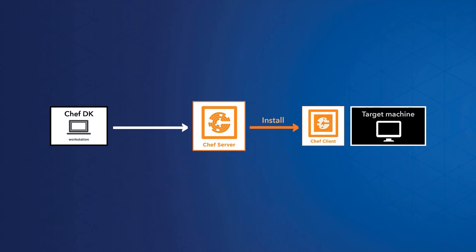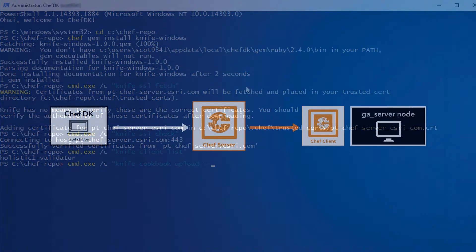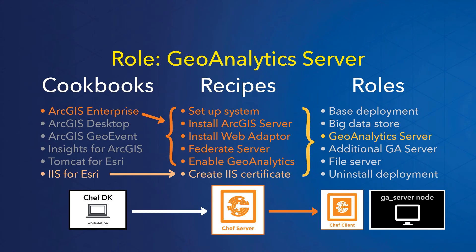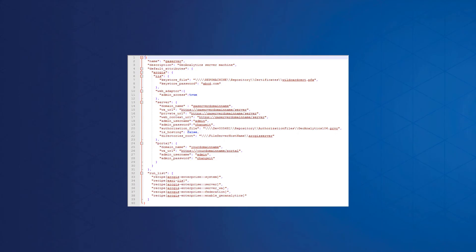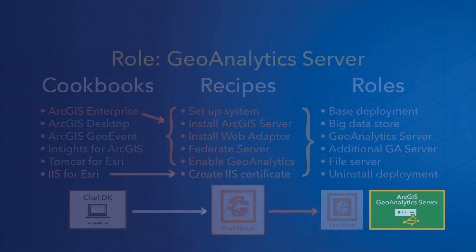Before the Chef server can perform any task on the client machine, it installs the Chef client software. At that point, your machines are referred to as nodes and are managed by the Chef server via the client. Throughout the process, you'll call commands from your workstation to the server to run recipes on your nodes, and the server and client will do the heavy lifting. When you assign a specific role, such as GeoAnalytics Server, to a machine node and then run the Chef client command, the Chef server will pick out the recipes and ingredients specified by the role and send them to the client to install. Once the client is done, the node is ready to go — the ArcGIS software has been installed and configured, and any work such as federating servers and registering data stores has already been done.